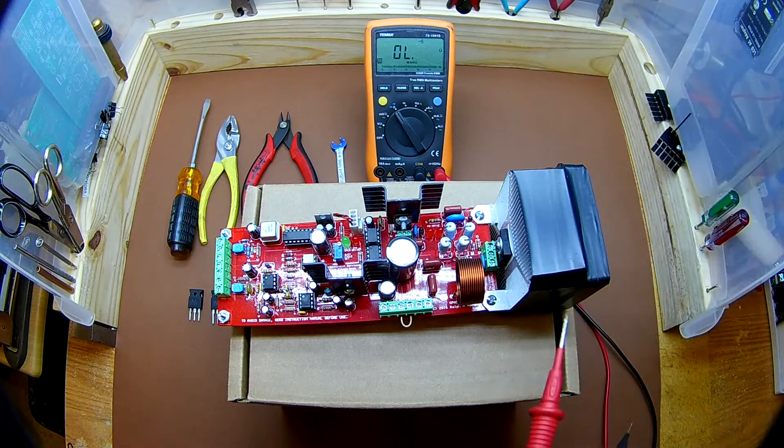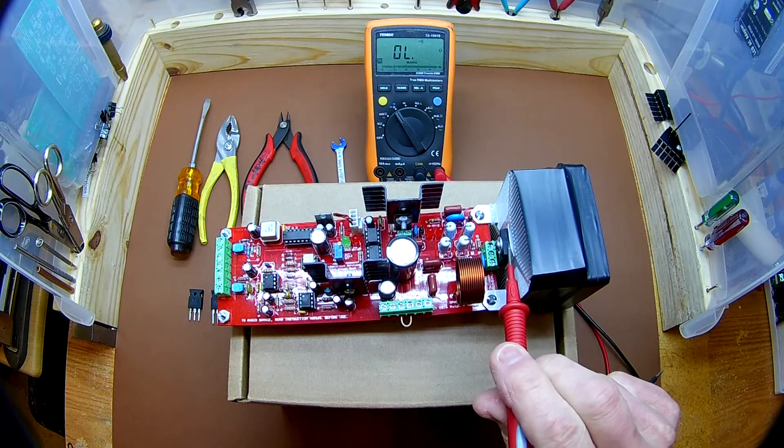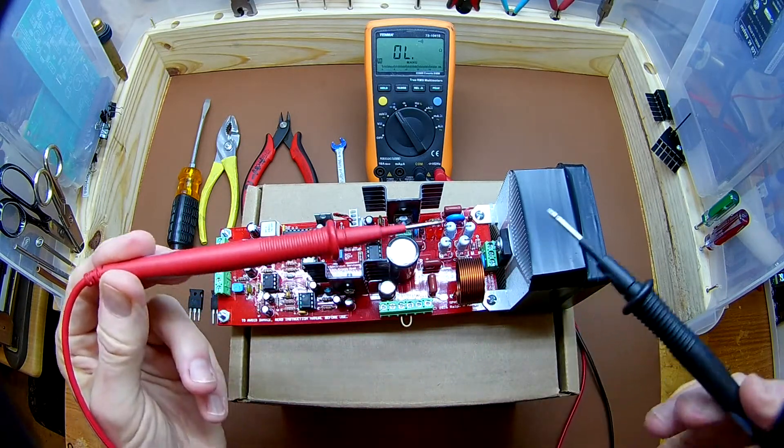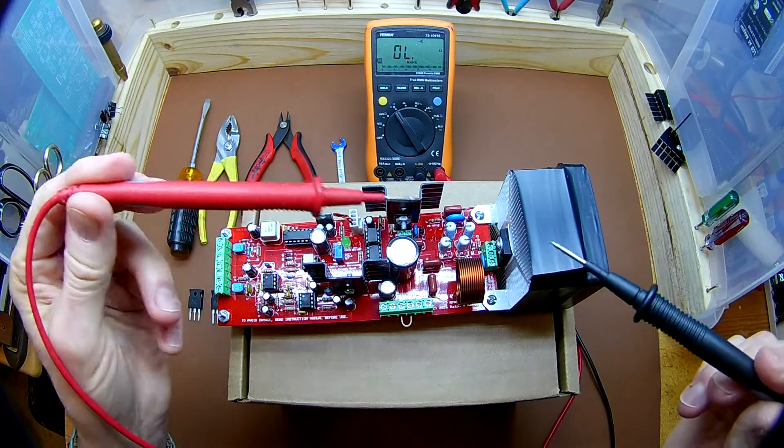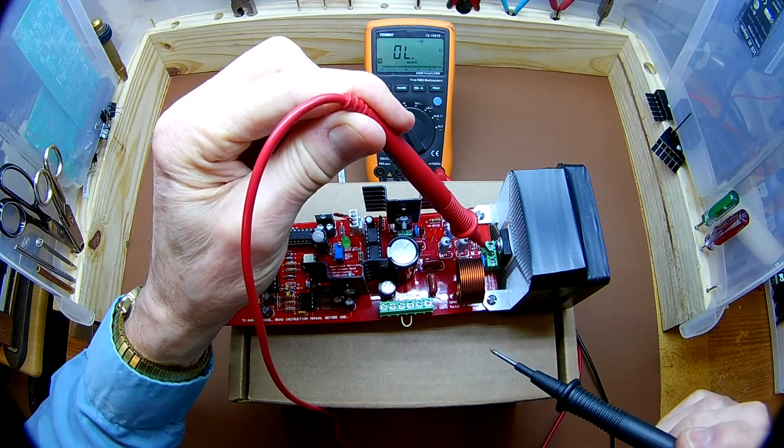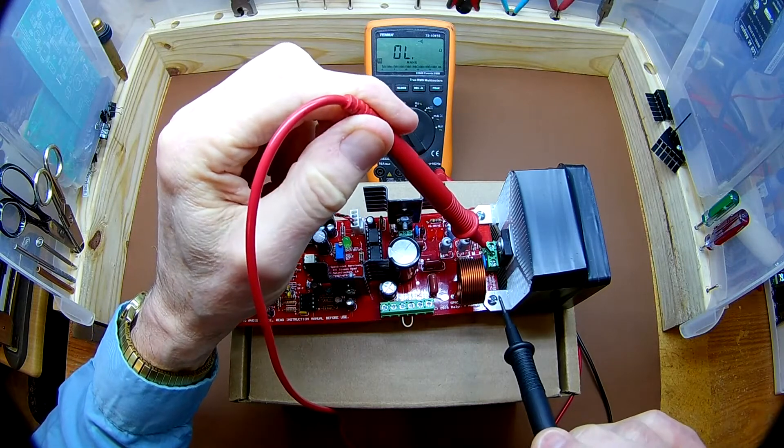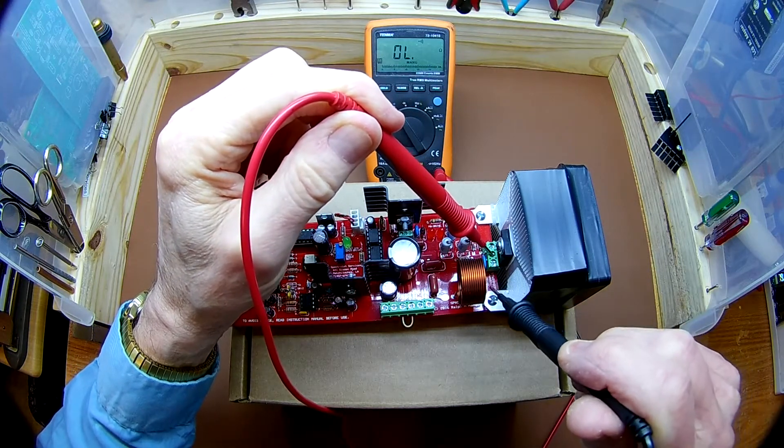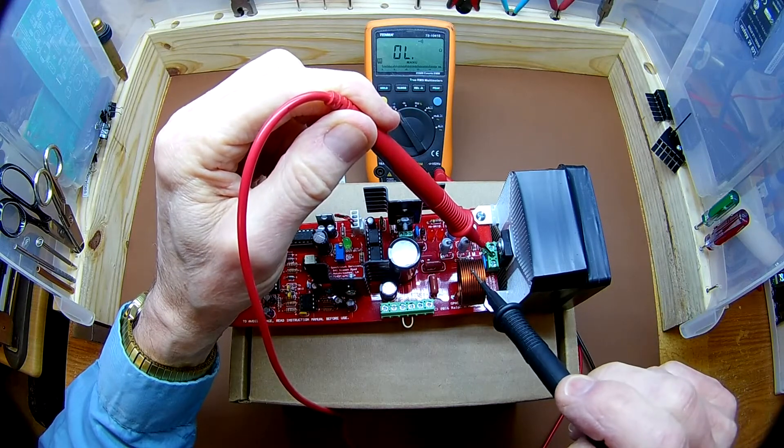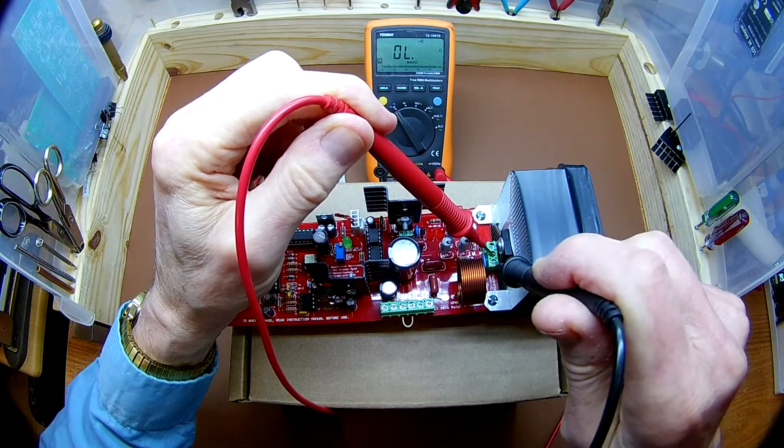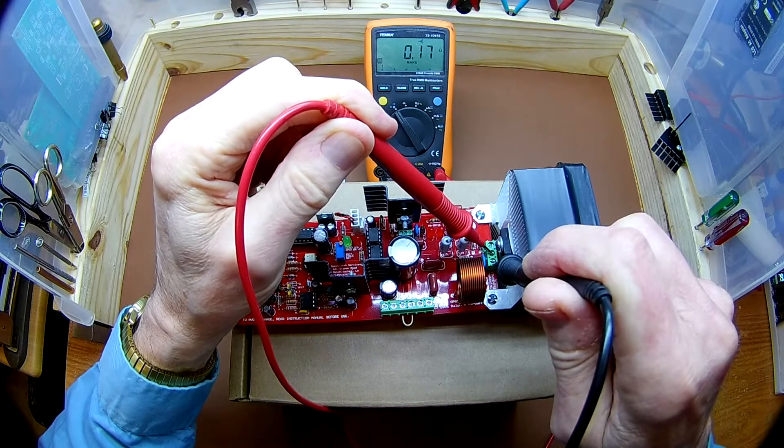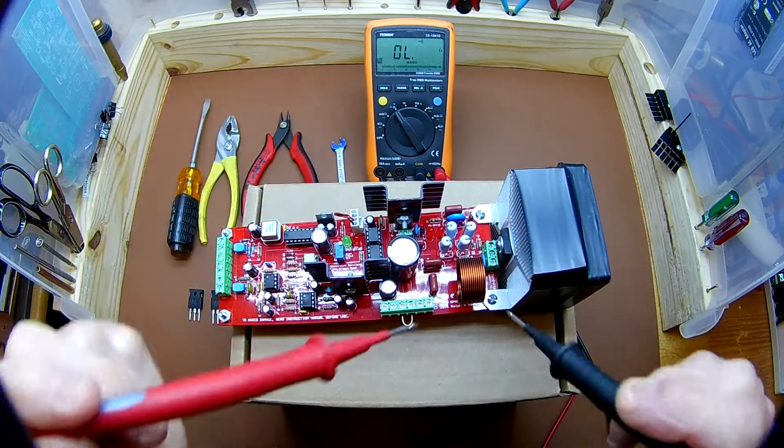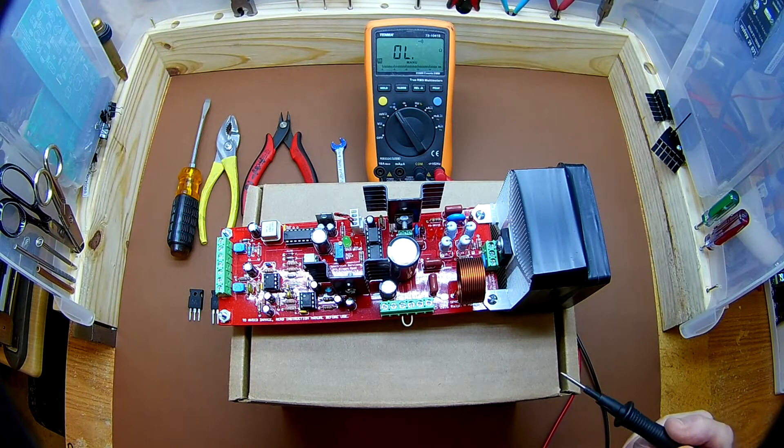The STW20NK50Z is located on the large heatsink on the amplifier. Place one of the terminal probes of the meter on the center screw of the small green connector that holds the transistor in place. Touch the other probe to the terminal that is closest to the large coil. If the meter sounds and shows very near zero ohms, that's an indication that the transistor has failed.